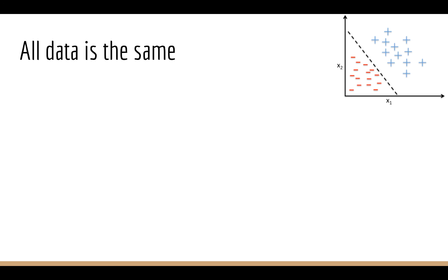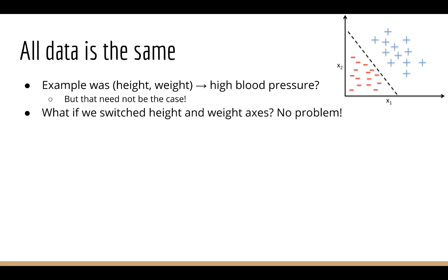One important point that I cover often is that all data is the same. I hope you've realized that in the discussion we just had about what machine learning is trying to do. There's no reason that the data had to be from the examples I used. So I said let's use height and weight to predict high blood pressure, but that need not be the case. What if we switched height to be weight and weight to be height? That's totally fine, it's still a geometry problem.